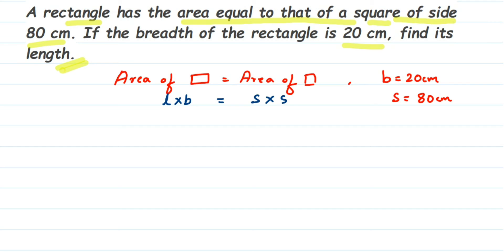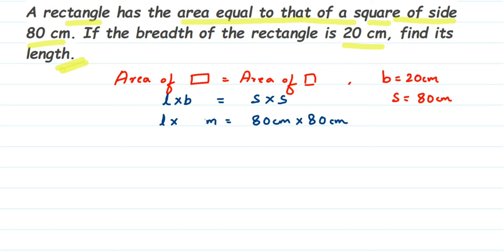Now let us substitute what we know from the question. We do not know length, so we write L. Breadth is 20 centimeter — I had written 80 here by mistake, it is 20 centimeter. And side is equal to 80 centimeter, so 80 centimeter multiplied by 80 centimeter.